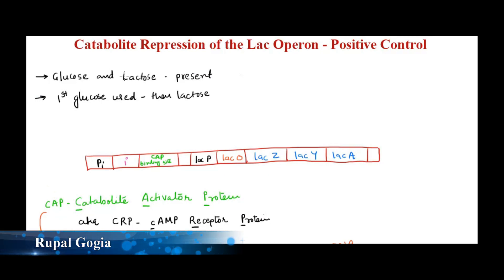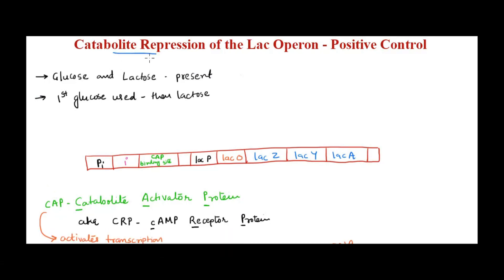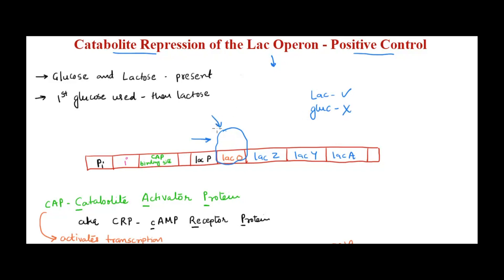Welcome back. Today we are talking about catabolite repression or positive control of the lac operon. In the last video we saw the negative control of lac operon, where there is no lactose, there will be a repressor protein bound to the operator so that it blocks RNA polymerase. Only when there is lactose present and glucose absent, allolactose will bind to the repressor, causing a conformational change, removing it from the operator so RNA polymerase can transcribe the genes.